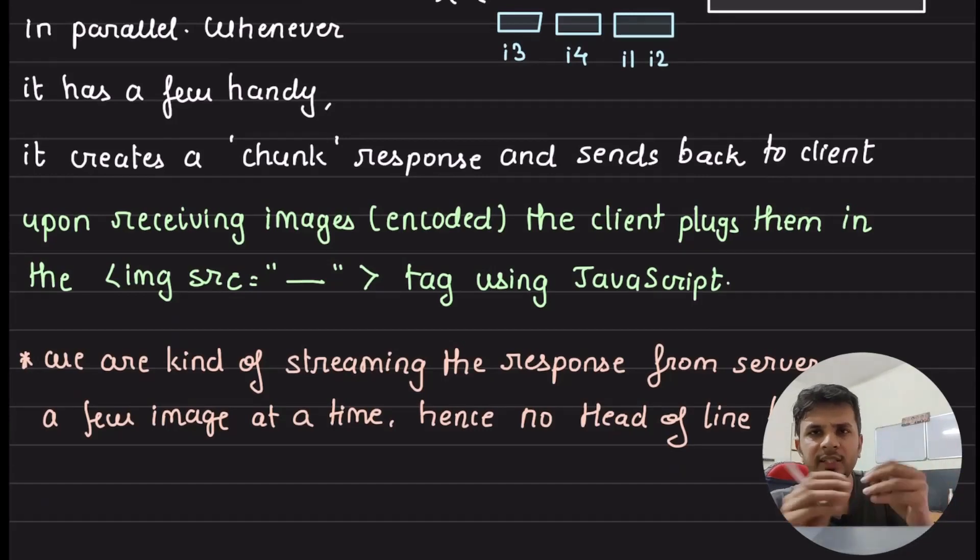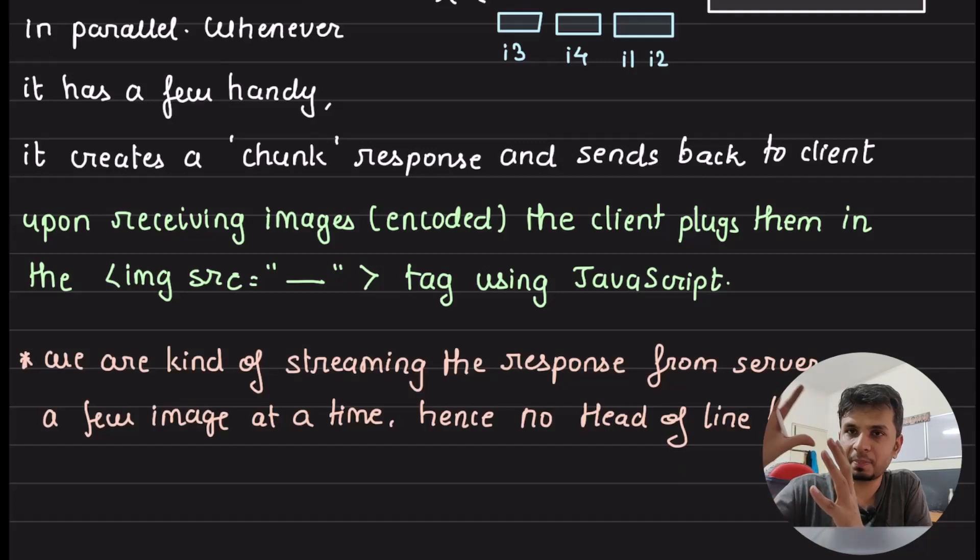That you are sending requests in bulk. Your server is fetching multiple images in parallel. As and when it is getting this image, it is creating this chunked response and sending it back to the client. Once all the images are sent, then your server sends a null response. Your client then terminates the connection.